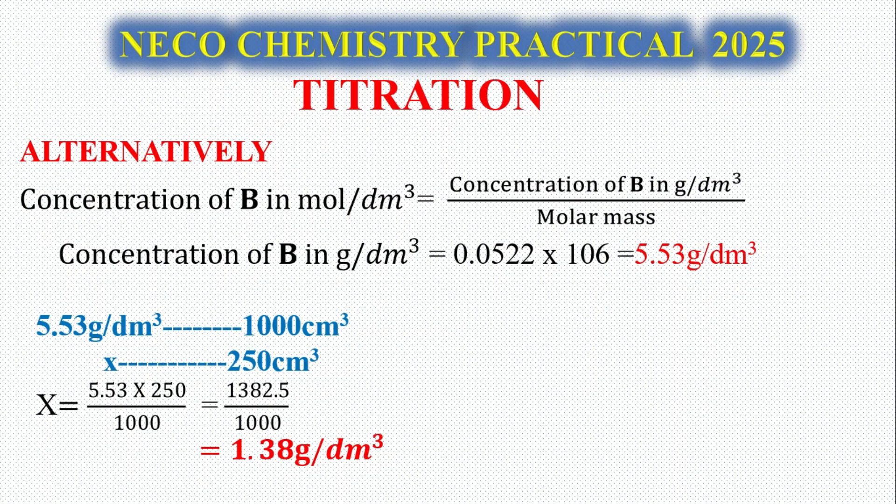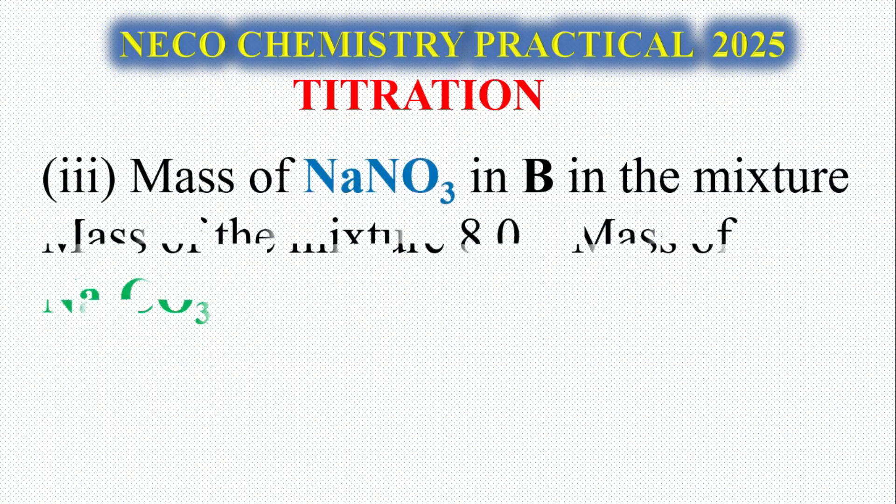That's an alternative way of solving that question. You can first calculate the mass in grams per dm³. Concentration in mol per dm³ = concentration in g per dm³ / molar mass. If you do that, you get 5.53. So 5.53 in 1000 cm³, X in 250 cm³. Cross-multiply, you get the same answer: 1.38 grams per dm³.